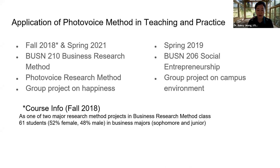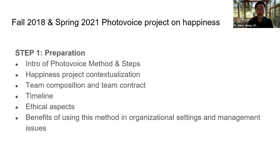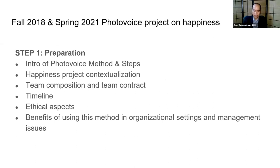In fall 2018, she had two sections totaling about 61 students using photovoice, and she collected all photos and published a book chapter. In spring 2019, in her Social Entrepreneurship class, she also applied photovoice in a group project for students to improve the campus learning environment. The classroom process begins with a prep step: introducing the photovoice method, choosing a topic — students voted for happiness — contextualizing it, creating teams of four to five, and setting a timeline for presentations.